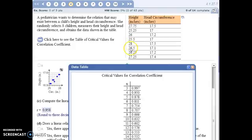And how many things of data do we have? 1, 2, 3, 4, 5, 6, 7, 8. So our critical value here is 0.707.